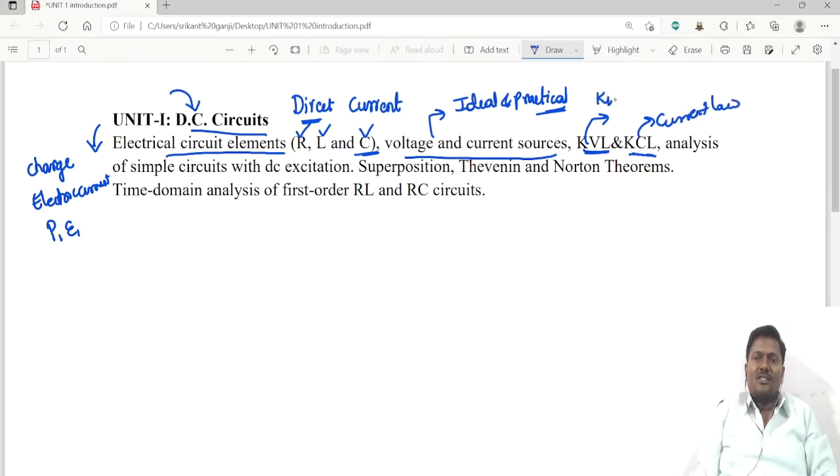KVL means Kirchoff's voltage law. Then analysis of simple circuits using DC excitation. He is giving some problems with DC excitation using Kirchoff's laws you can solve. Apart from this we have mesh analysis and nodal analysis to solve the problems.